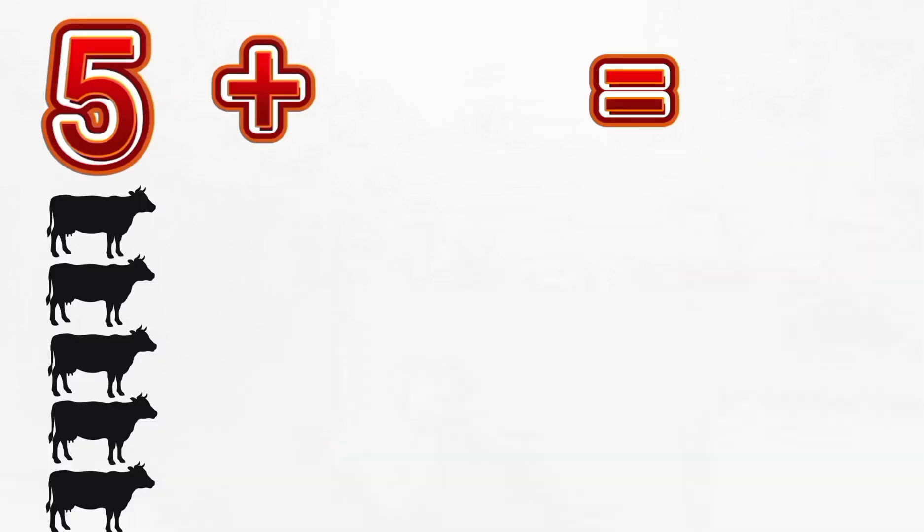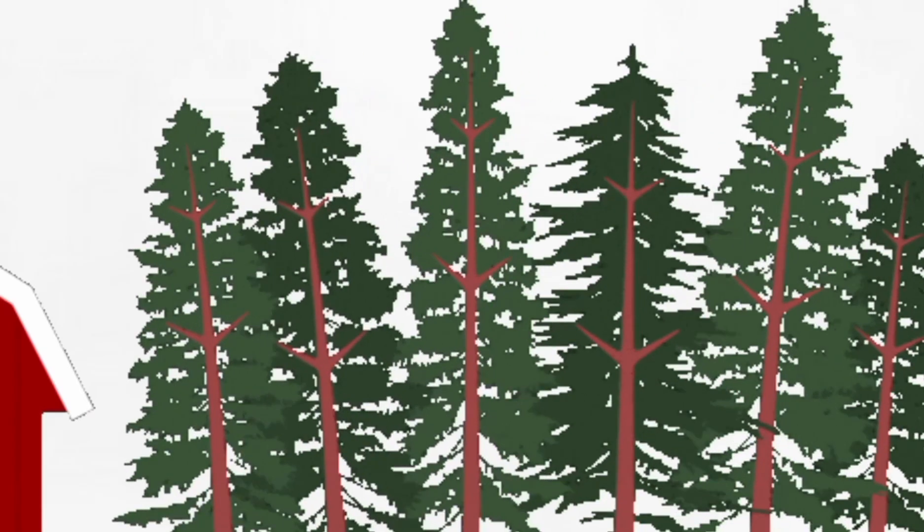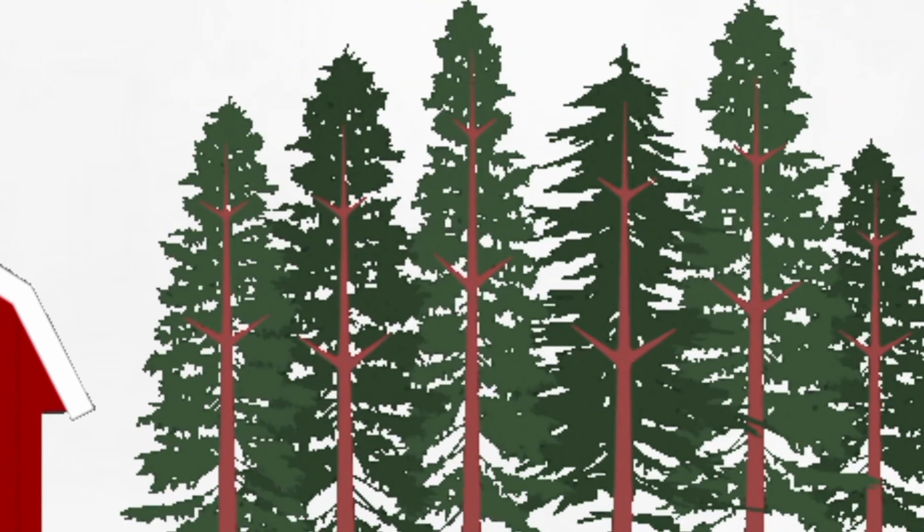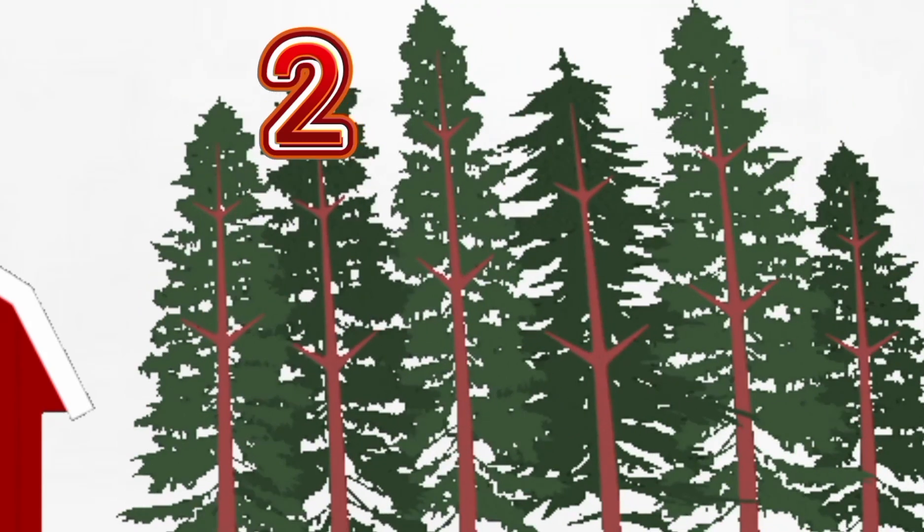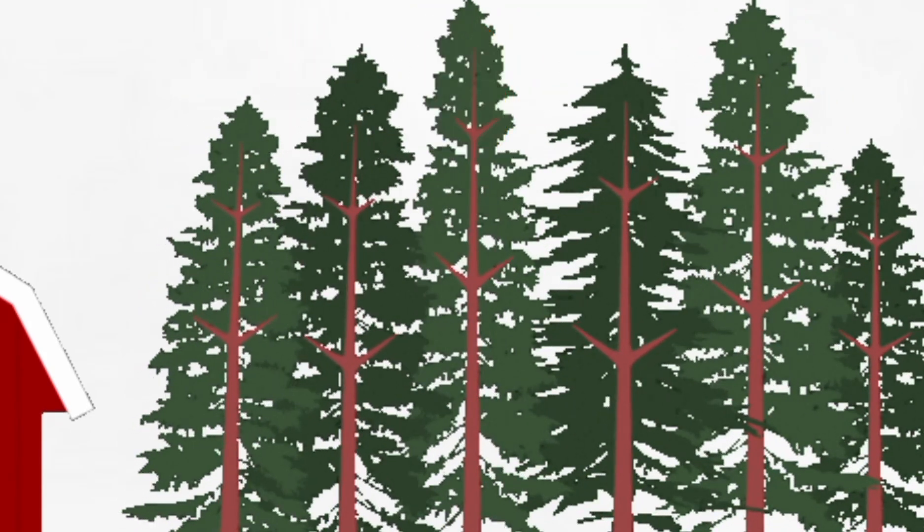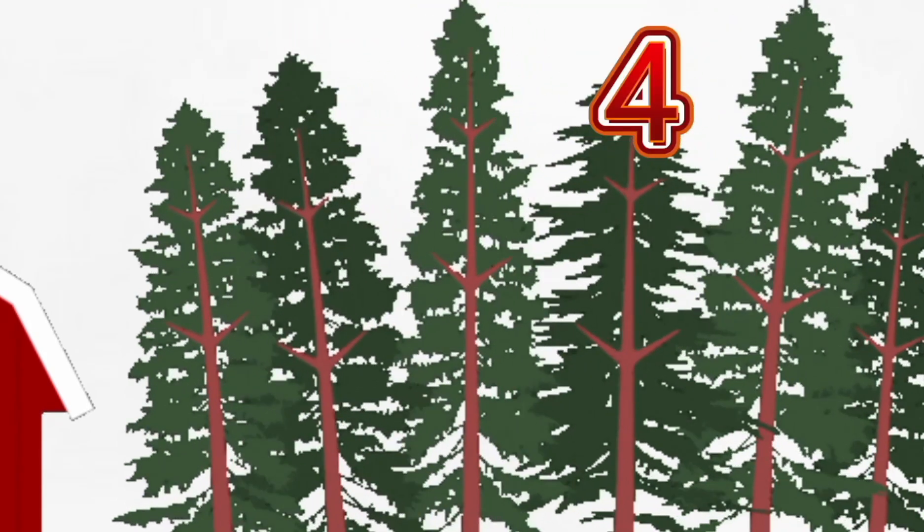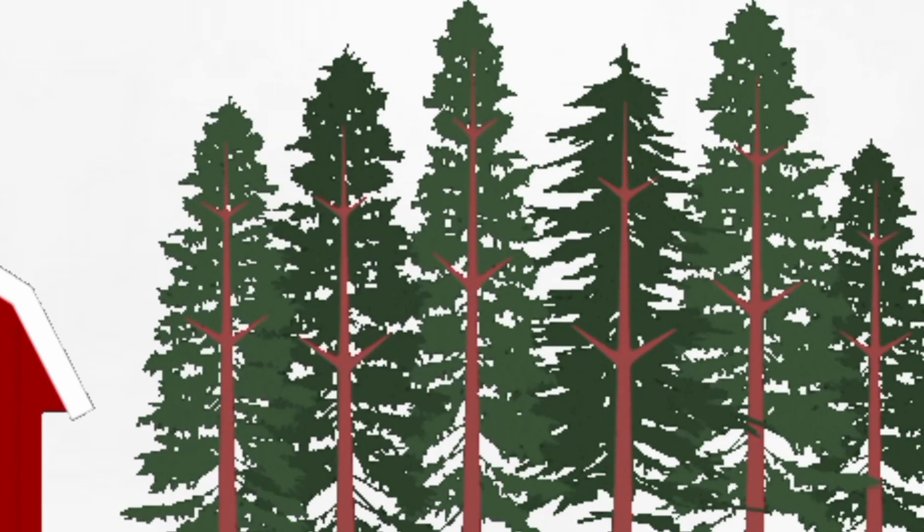Let's see what our second number will be. Now let's count the trees next to the barn. One. Two. Three. Four. Five. And six.